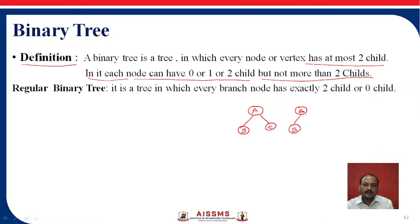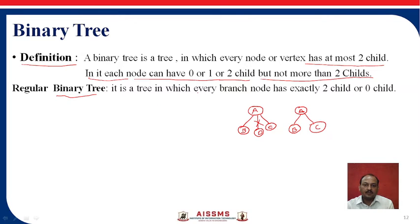But if you are going to add one more child beyond 2, then we are going to say this is not a binary tree. A regular binary tree is a tree in which every node has exactly 2 children or 0 children.